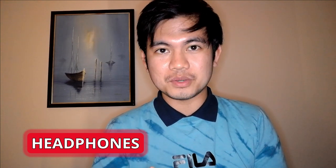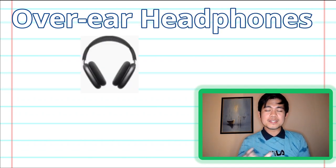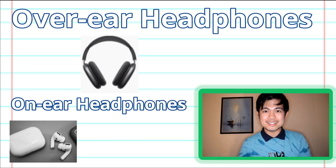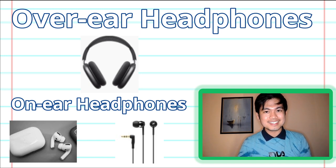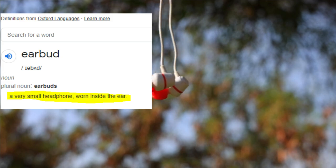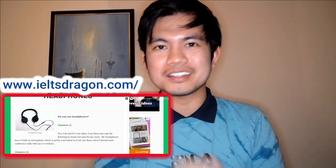Let's talk about headphones. This topic is easy because we use headphones all the time — when listening to music or attending online conference calls. Learn some topic words: we have over-ear headphones, which are normally bulky and worn on the head. Another type is on-ear headphones or earbuds. Earbuds are very small headphones worn inside the ear, so they are another type of headphone. There are answered questions about headphones on the speaker's website, so check that out for more.